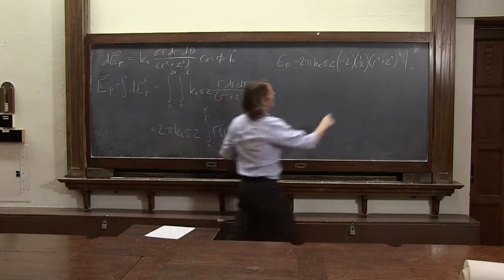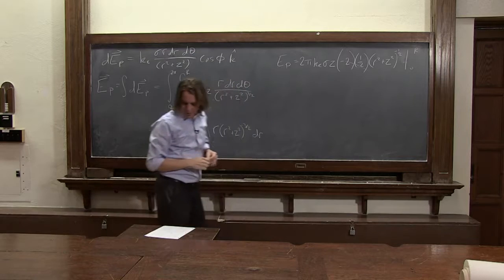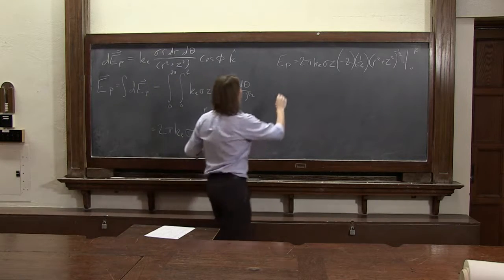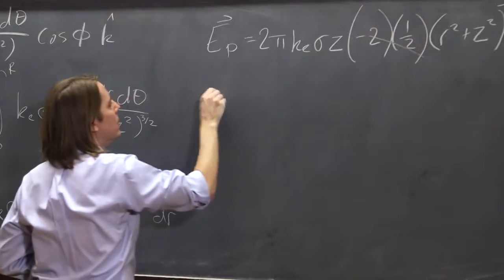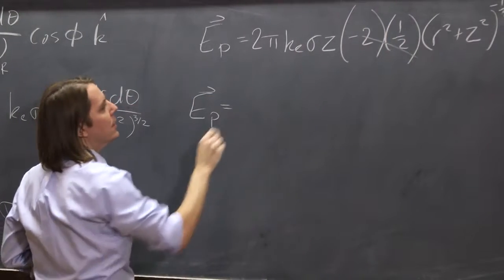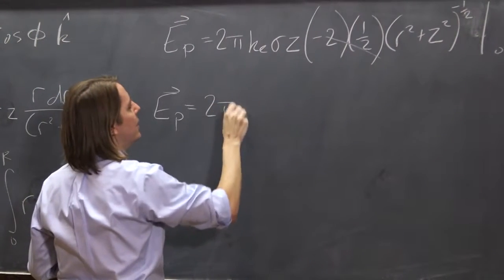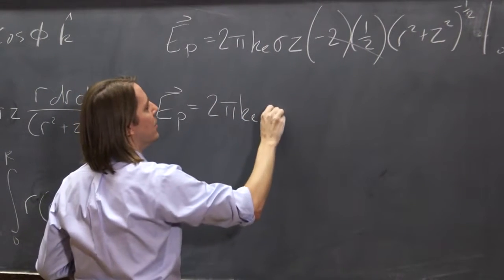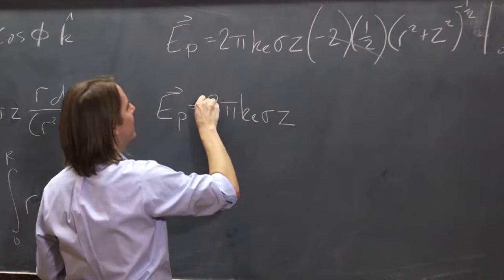So we can simplify a little bit. Those 2's go away. It leaves a negative sign sitting there, which is along for the ride. So e, of course, it's in the k direction. So ep equals, let's keep our constants as many as we can, 2 pi ke sigma z. And those 2's went away. Pull the negative out like that.